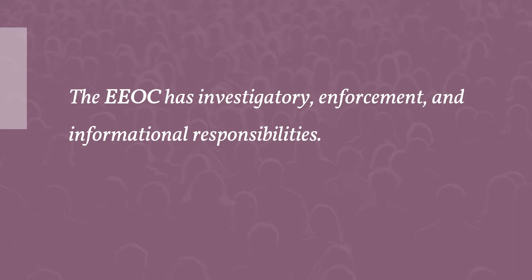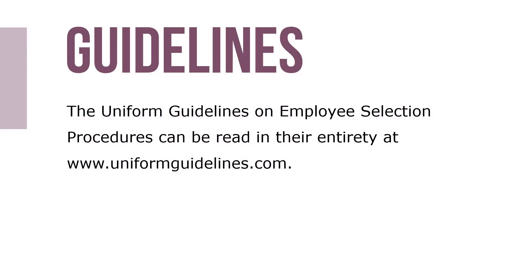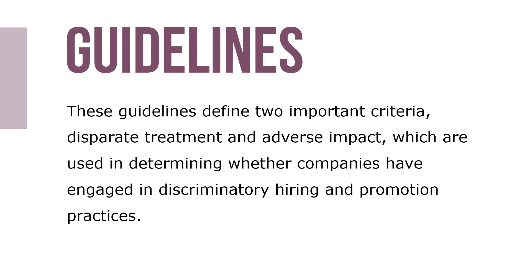The EEOC publishes guidelines that organizations can use to ensure they're in compliance with the law. One of the most important guidelines, jointly issued by the EEOC, the US Department of Labor, the US Department of Justice, and the Federal Office of Personnel Management, is the Uniform Guidelines on Employee Selection Procedures, which can be read in its entirety at www.uniformguidelines.com. These guidelines define two important criteria: disparate treatment and adverse impact.